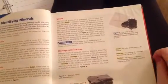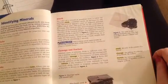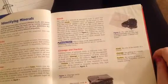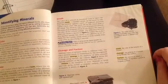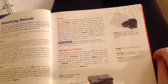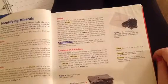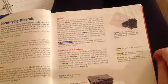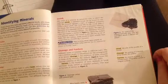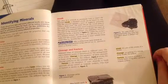Cleavage and fracture. Different types of minerals break in different ways. The way a mineral breaks is determined by the arrangement of its atoms. Cleavage is the tendency of some minerals to break along a smooth, flat surface. Figure 3 shows the cleavage patterns of minerals such as mica and halite.